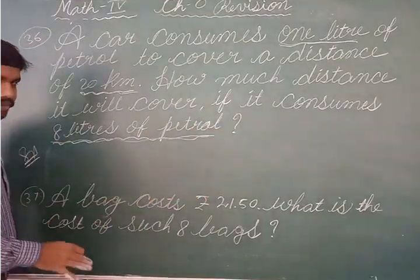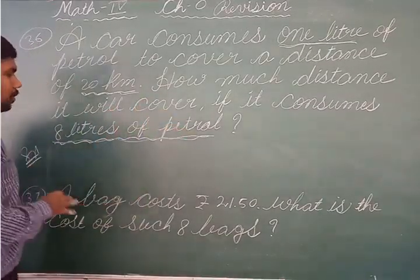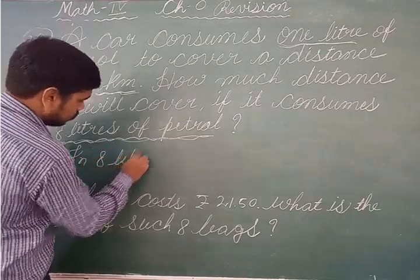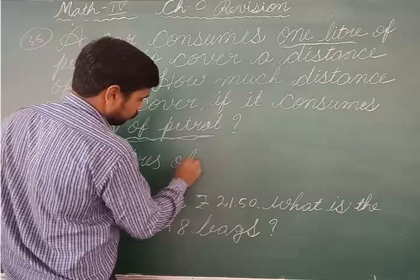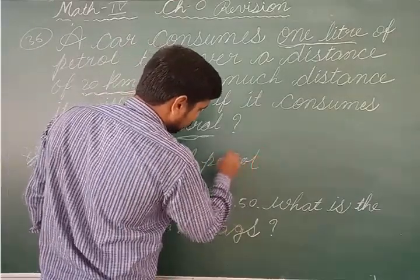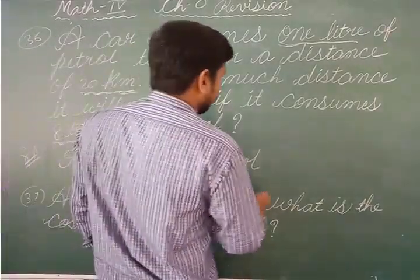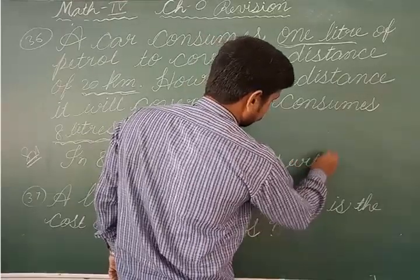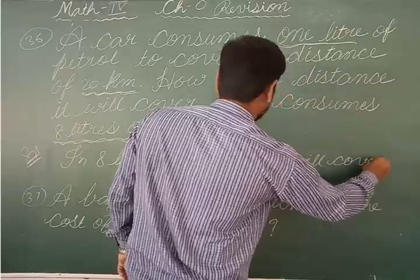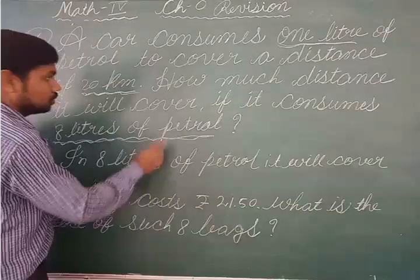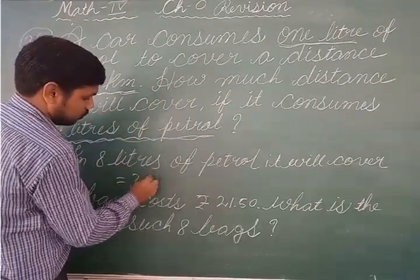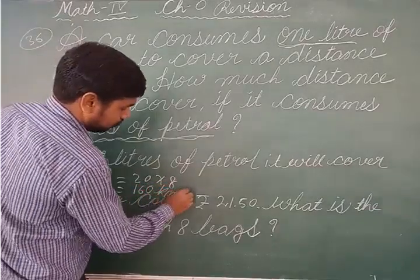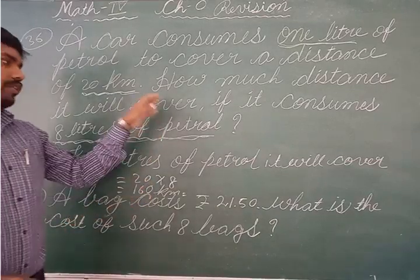You have to write the working. Therefore, in eight liters of petrol, it will cover — in eight liters of petrol, it will cover is equal to 20 multiplied by 8. That means two eights are 16, and zero. So 160 km. Don't forget to write the unit. So 160 km total, it will move in eight liters of petrol.